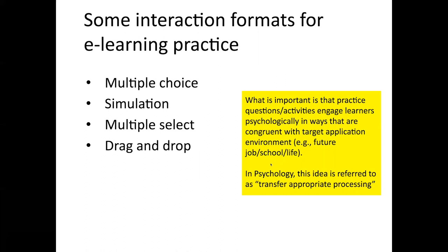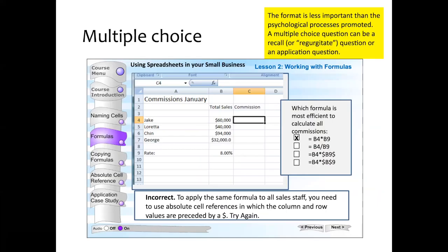In psychology, this idea is referred to as transfer-appropriate processing. It's key that it's not simply about matching the behavior of the job or future life skill, but that the thinking needed to be accurate in those job, school, or life situations is being exercised in a way that's appropriate to transfer to those future target situations.